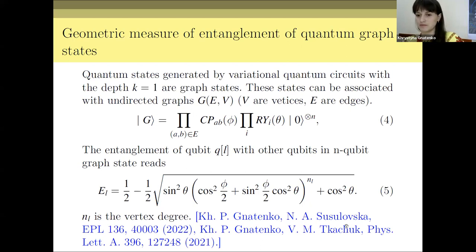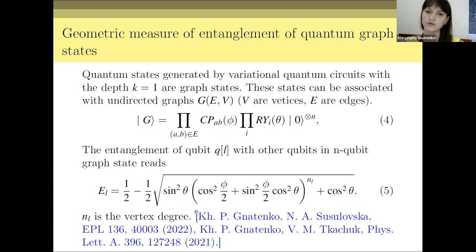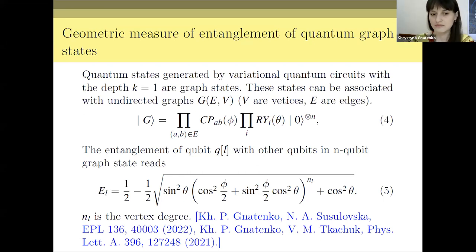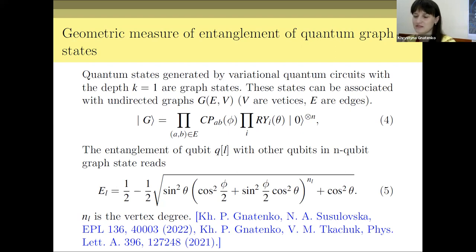In a paper published with my PhD student Natalia Susulowska, we obtained an expression for the geometric measure of entanglement of one qubit with other qubits in this quantum graph state. It is interesting to note that the result depends on the circuit parameters and also on an additional parameter — the vertex degree — which is a very important parameter in graph theory. We found a relation between our quantum result and the degree of the vertices.